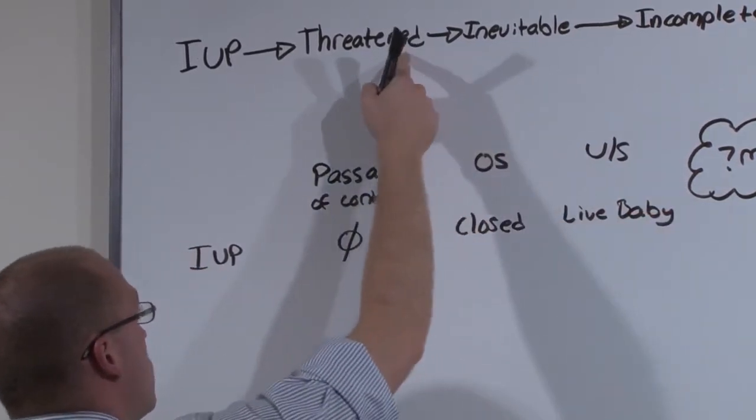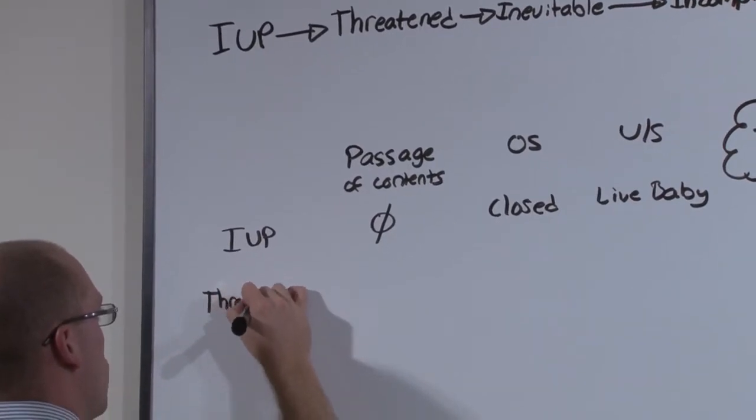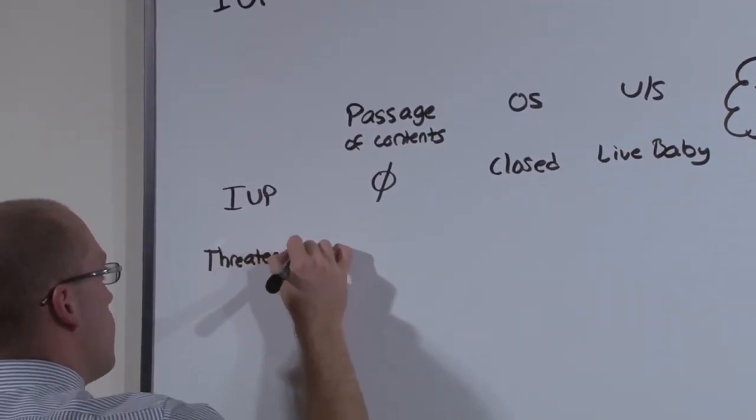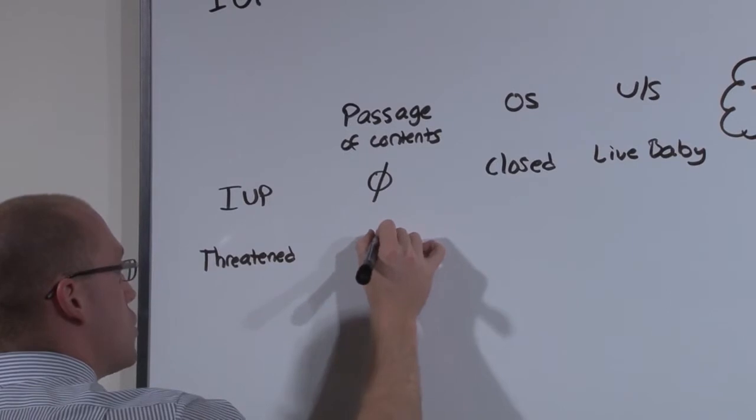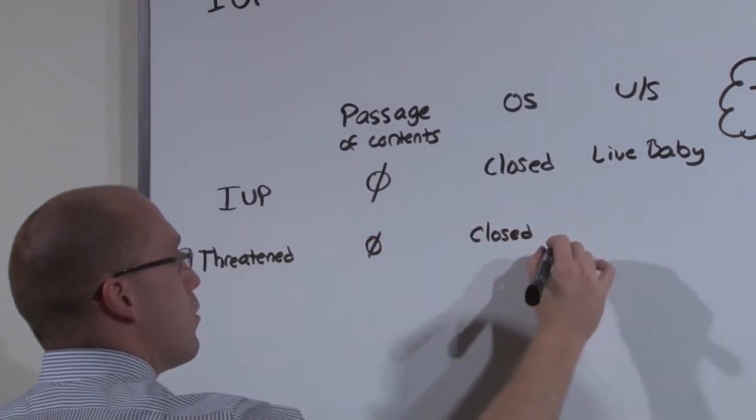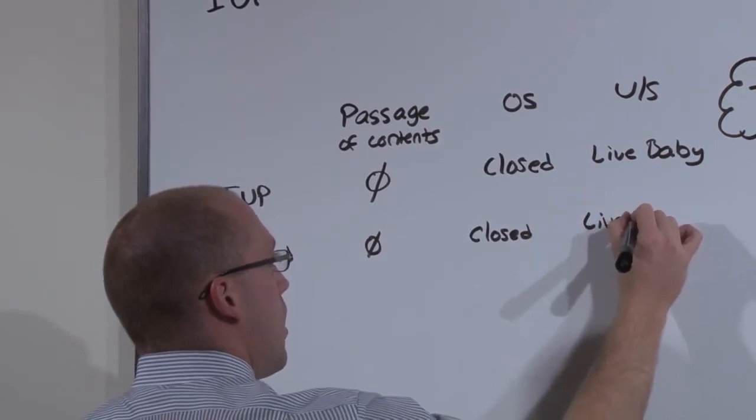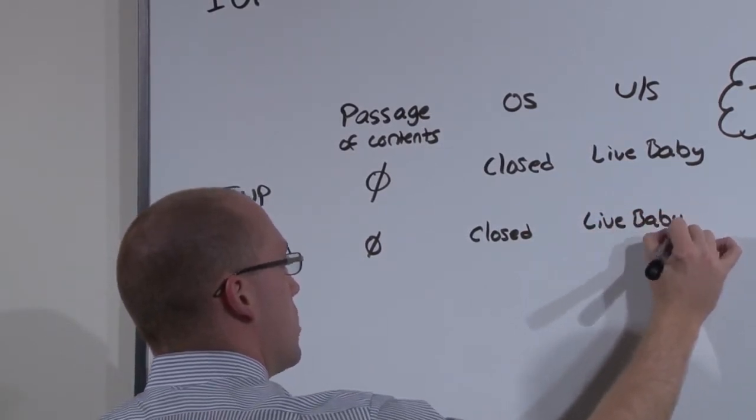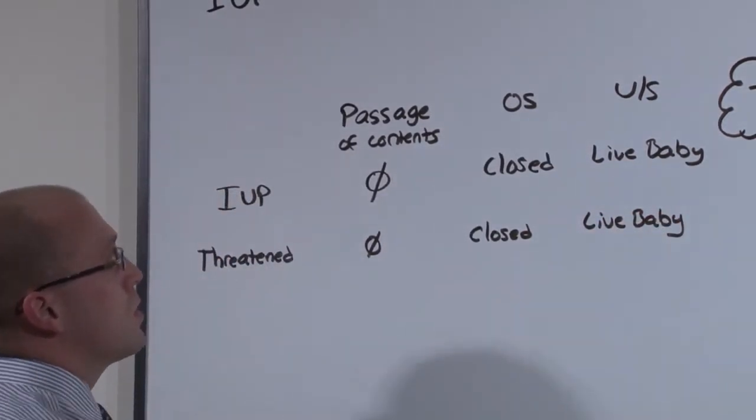A threatened abortion is one where there is fetal distress, mom is bleeding, but it looks just like an intrauterine pregnancy. If you can get baby and mom over the episode, the pregnancy can continue. Strict bed rest is recommended.